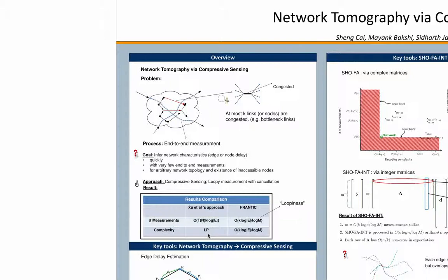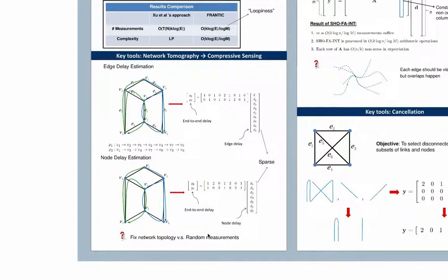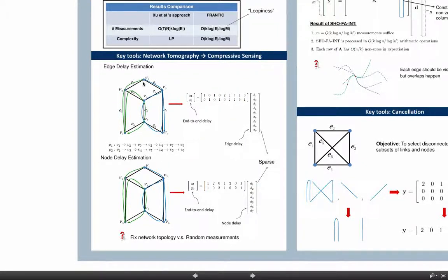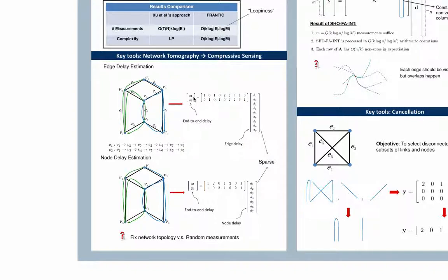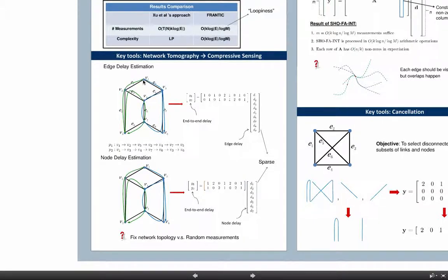Now let's look at some key ideas in our algorithm. We know that the problem of network tomography is very similar to the problem of compressive sensing. Let's see how. Consider this network and let's send two test packets — one over the green path and the second over the blue path. Let y1 and y2 be the time taken for both these test packets, and let d1 through d9 be the individual delay values for edges e1 through e9. It's easy to see that y1 and y2 are related to d1 through d9 through a matrix multiplication operation, and for each of these paths, the weight of any edge is equal to the number of times any packet travels on that edge.